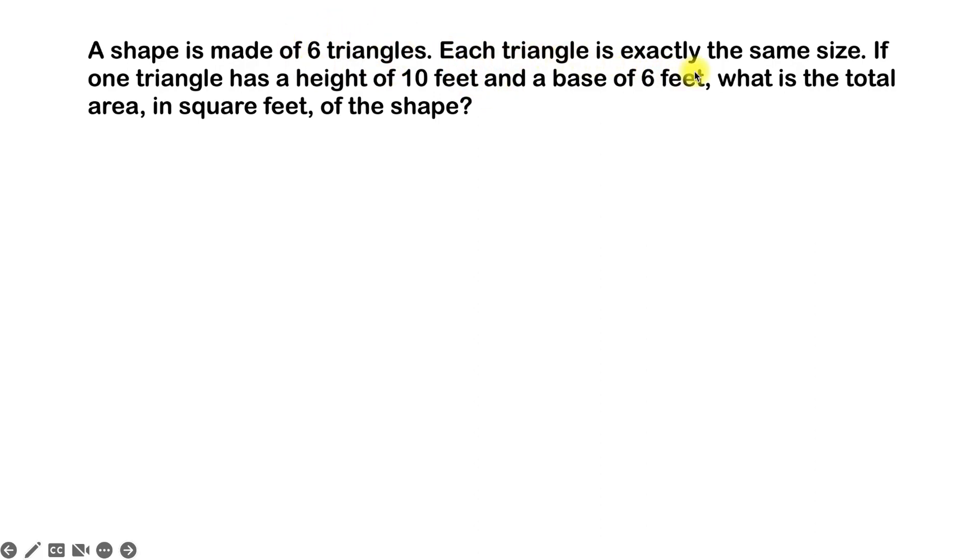Each triangle is exactly the same size. If you have triangles that are the same size, it means they'll have equal areas. In the next sentence, they tell us everything we need to know about one of the triangles. So we have a triangle, and this triangle has a height of 10 feet and a base of 6 feet.